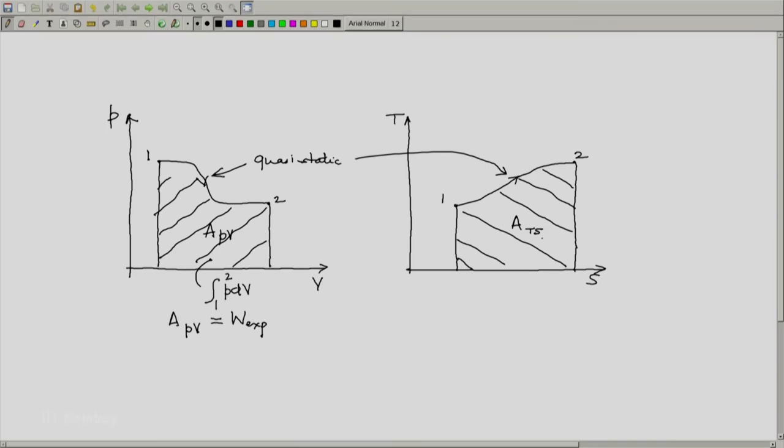What about the area ATS? This area equals integral T dS from state 1 to state 2.